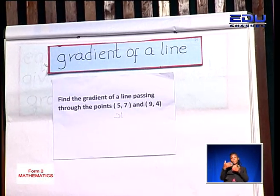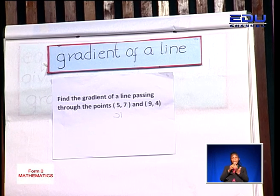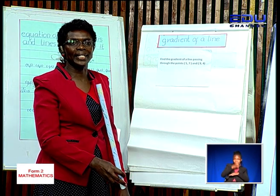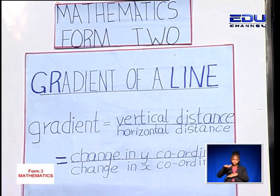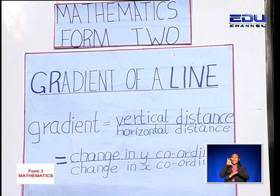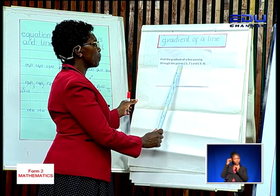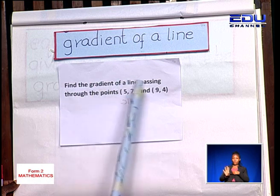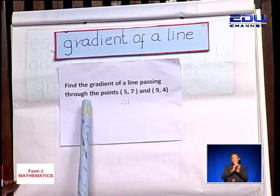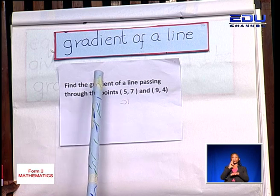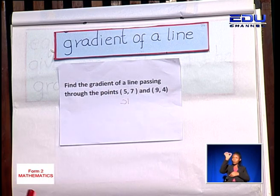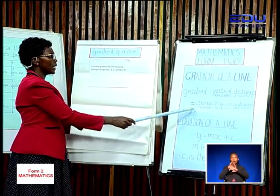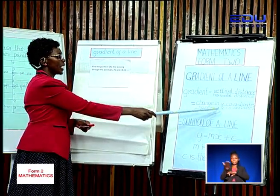We have said the gradient is a ratio of the vertical distance over the horizontal distance. Here we have a question: find the gradient of a line passing through the points (5, 7) and (9, 4). To get the gradient when you are given two coordinates, we are going to use the formula: the change in y coordinate over the corresponding change in x coordinate.